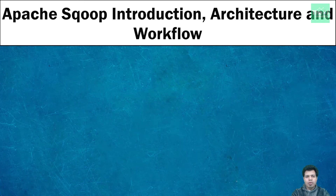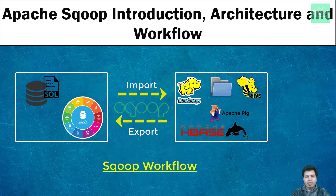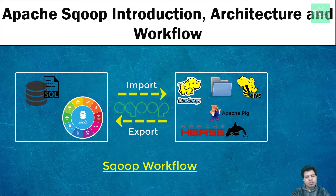Let's go through the simple Scoop workflow. On the left hand side you can see several data sources like relational databases and data warehouse systems which contain data in some structured form. On the right hand side we have Hadoop and related ecosystem technologies like HDFS, Hive, HBase, Pig, etc. Apache Scoop comes into picture to transfer data between these systems — Scoop import transfers data from relational databases to Hadoop, and Scoop export transfers data from Hadoop to relational databases.